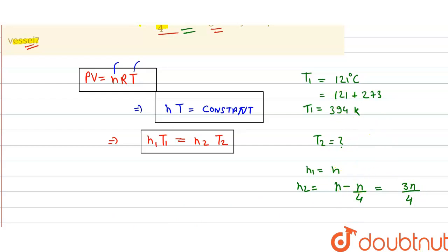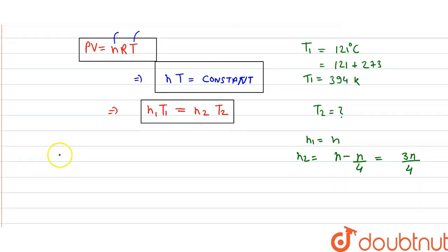Now we will put all these values in our given equation. The value of n1 is n, so n into T1 is 394 Kelvin equals n2 which is 3n by 4, times T2.